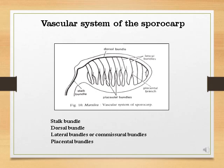Thus the sporocarp receives its vascular system with the help of four different bundles: namely, the stalk bundle, dorsal bundle, lateral bundle, and placental bundle.